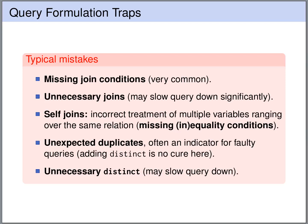Now that we have had an introduction to the basics of SQL, let's summarize some of the main mistakes in query formulation. One of the main mistakes is missing join conditions — if we miss a join condition, we usually see unexpected duplicate rows in the results. Next, unnecessary joins are also a mistake: we might not see it in the result, but it may slow down the query significantly.